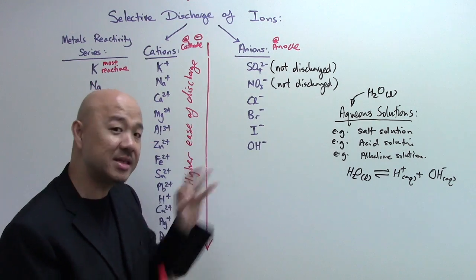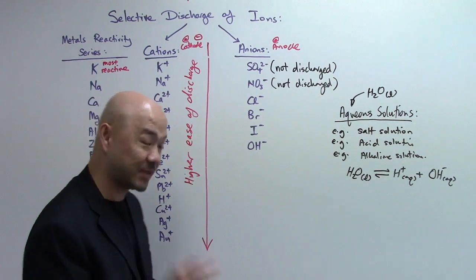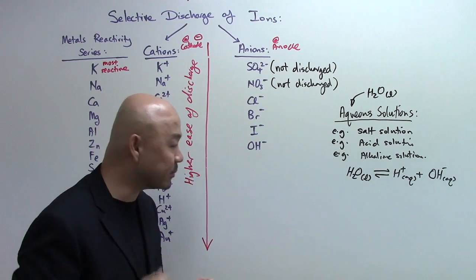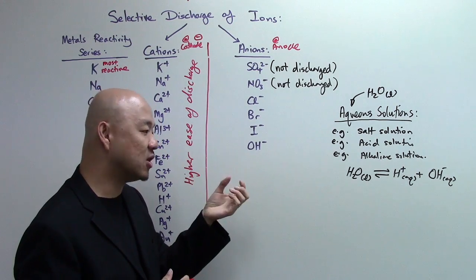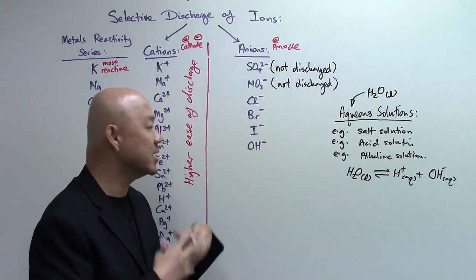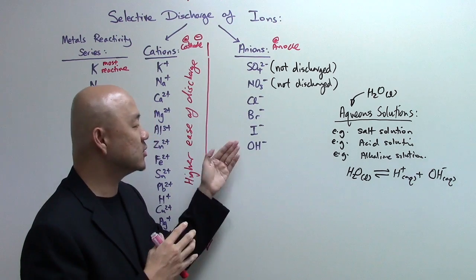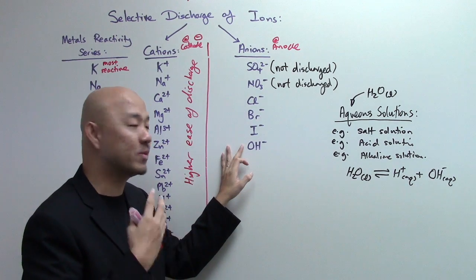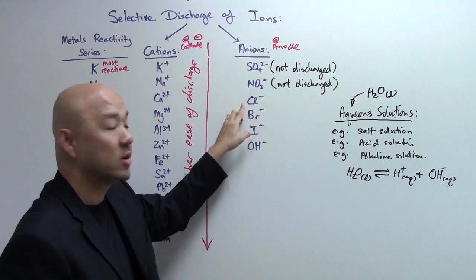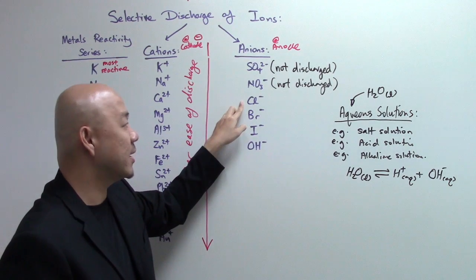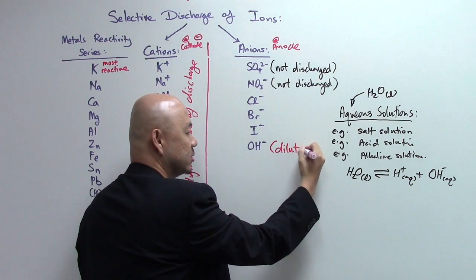What about the anions? This is a bit tricky, so I want everyone to take note over here. If it's a dilute solution, dilute sodium chloride solution for example, then what happens is that dilute means you have less of the solute. So sodium chloride, there's less of it. There's more of the water. More water also means there's more of the hydroxide ions. So the hydroxide ions will be the one that will be selectively discharged. We just follow this ease of discharge series. Nothing changed. Follow this. OH- will be discharged instead of chloride ions in aqueous or dilute sodium chloride solution. Let me write a note here. This is dilute solution.